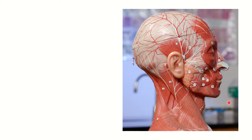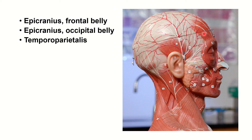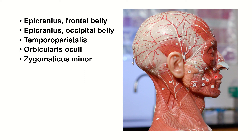Lateral view of the head and neck model. Again you have the epicranius, or aponeurosis of the occipitofrontalis muscle. This is the occipitalis, and this is the frontalis muscle or belly. Temporoparietalis is a superficial muscle, compared with temporalis which is a deeper muscle. Orbicularis oculi. Zygomatic minor is a little bit difficult to see.